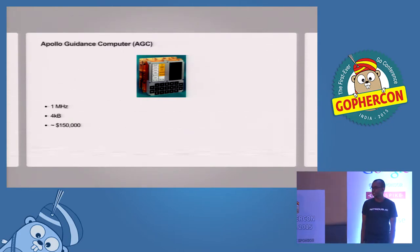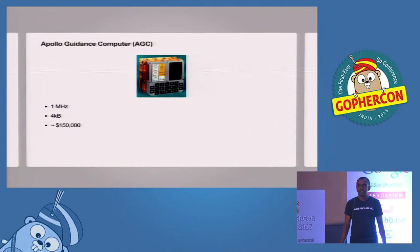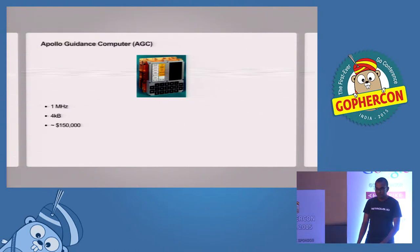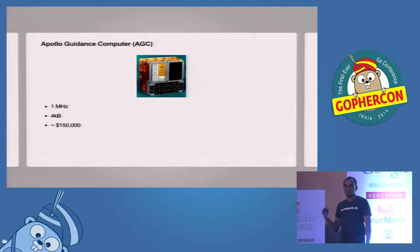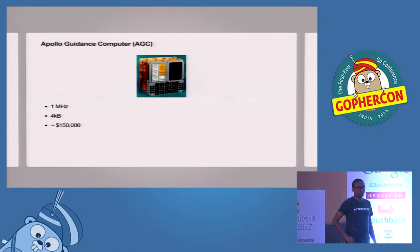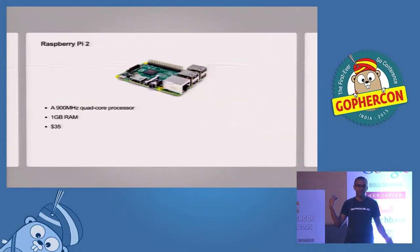A bit of a history lesson. This is the Apollo guidance computer, released in 1966 — that's 50 years back. Back then it had one megahertz of processing power and four kilobytes of RAM. Four kilobytes of RAM. And it cost a whopping $150K. But the coolest part is what it helped us achieve — this put a man on the moon.